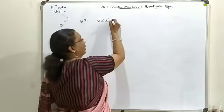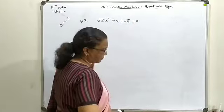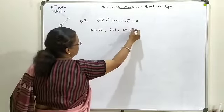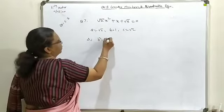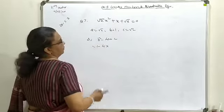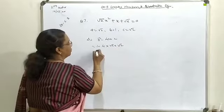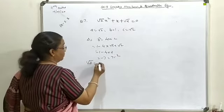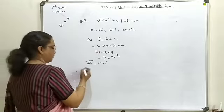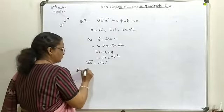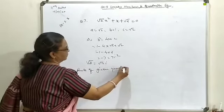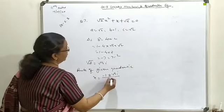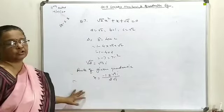Question 7: √2·x² + x + √2 = 0. Here a = √2, b = 1, c = √2. Δ = 1 − 4·√2·√2 = 1 − 8 = −7 = 7i². So √Δ = √7·i. Roots: x = (−b ± √Δ) / 2a = (−1 ± √7·i) / (2√2).